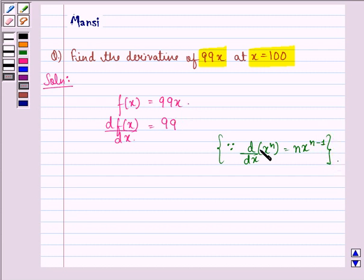In this case, n is equal to 1. So x raised to power n minus 1, that is 1 minus 1, becomes 0, and anything raised to power 0 is 1. So df(x) by dx equals 99.